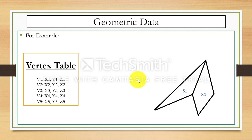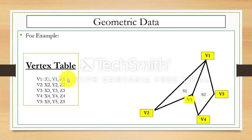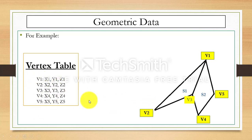So how we can represent the geometric data — first we have the vertex table. For example, here we have five vertices: v1, v2, v3, v4, v5. For the first vertex we have three axes x, y, z and we denote these coordinates as x1, y1, z1; then x2, y2, z2; and so on. So for all vertices you can see we have three dimensions.